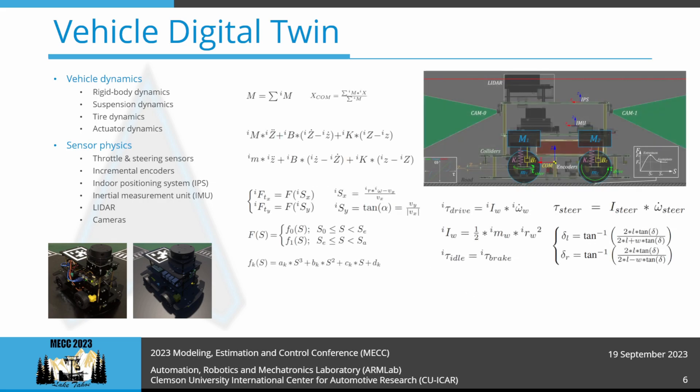The virtual vehicle is jointly modeled as a rigid body and a collection of sprung masses with inherent damping. The sprung mass representation computes the suspension forces, which aggregated with the tire forces are applied to the rigid body representation that exactly mimics the mass, center of mass, and moment of inertia of the physical vehicle. Additionally, the vehicle's driving and steering actuators are modeled based on their torque-speed profiles, allowing accurate simulation of their response delays and saturation limits.